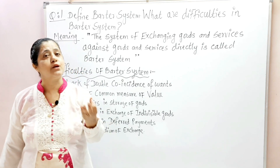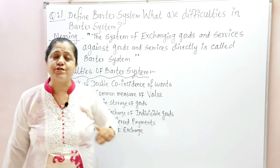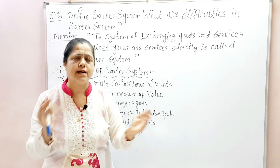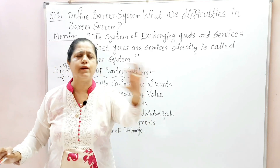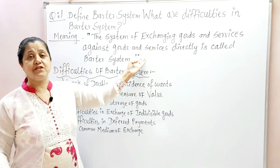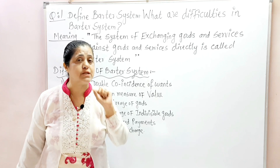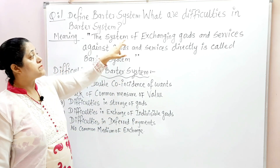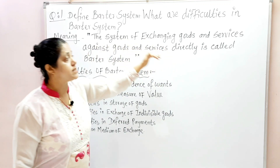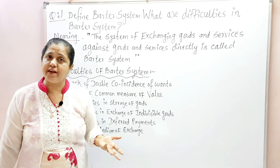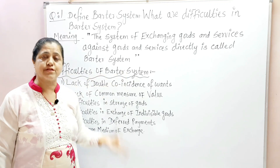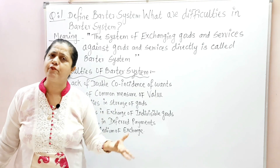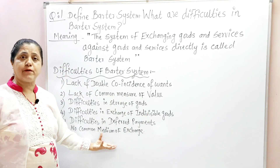This is the barter system. For your answer, first write a short introduction: in ancient times when money was not there, the economy was very simple, wants were very limited, and they were satisfied by the barter system. Then write the meaning or definition of barter system: it is the system of exchanging goods and services against goods and services directly. Then in Part C, write the difficulties of barter system — we discussed 6 points, and you can write any 4-5 of them.